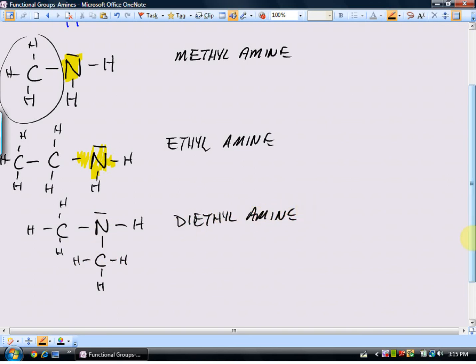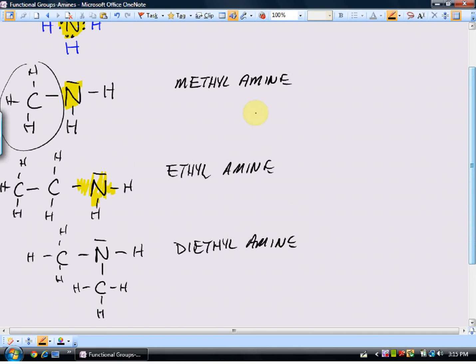Now, notice the difference. Up here, we had a structure that could be represented by a general formula R, where R is any carbon group, connected to a nitrogen, and we had two hydrogens attached. These are called primary amines. Essentially, it means there's only one carbon attached to the nitrogen. We sometimes use that designation, the primary.